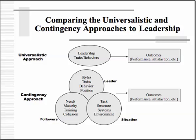The contingency approach looks at the leader, the follower, and the situation. The traits and behavioral theories are what we would call a universalistic approach — that if you use these traits and behaviors, you will get the outcomes that you want, such as performance and satisfaction among your followers. The contingency approach is a little more complex.